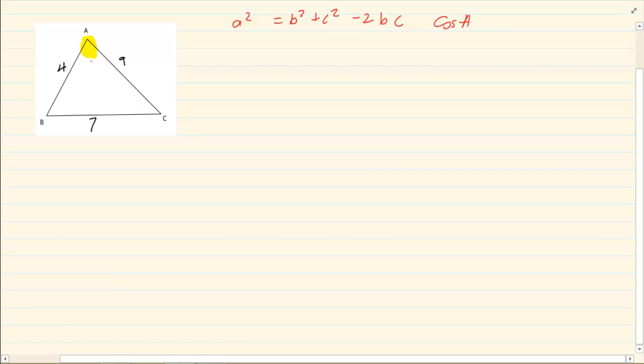Now substitute what you have. We have that a is 7. So we have 7 squared is equal to our b is 9. So we have 9 squared plus our c is 4 minus 2, 9 times 4 cos a.